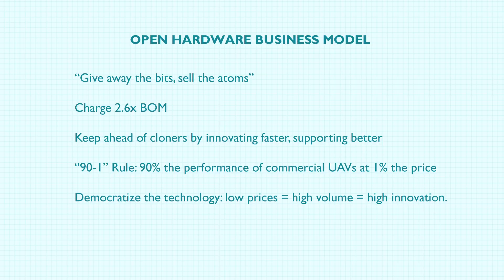I talked a little bit about open hardware, but this is sort of the business model: we give away the bits, we sell the atoms. We charge a very simple price — whatever it costs, we charge 2.6 times that cost. 2.6 is like this magic number. It allows for two 40% margins: one 40% margin for the manufacturer — that's us — and another 40% margin for the retailer and distributors. It's super transparent and a lot less — an aerospace margin would be like a thousand percent or ten thousand percent.